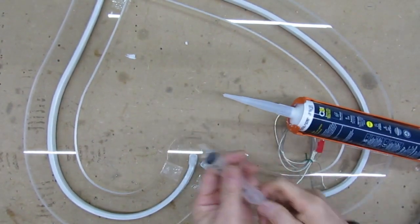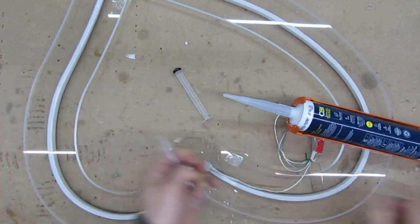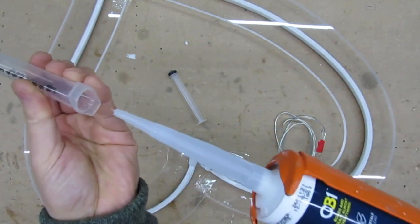If you want, you can use a syringe to add the silicone instead of the gun. This gives you a little bit more control.